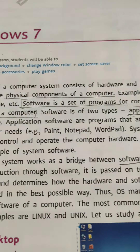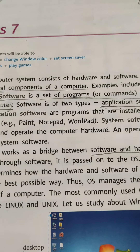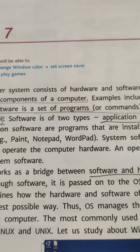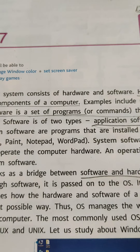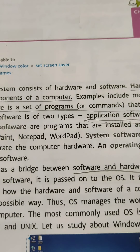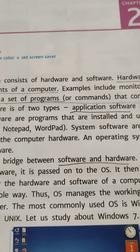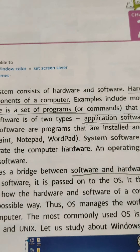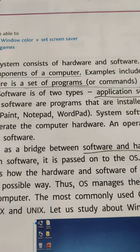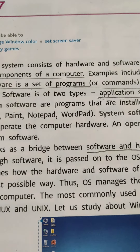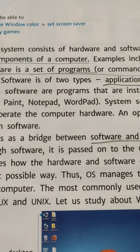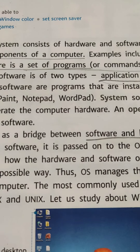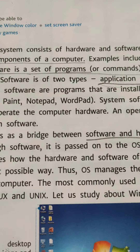These are application software. System software is the software whose programs control and operate the computer hardware. An operating system is one type of system software. All operating systems like Windows XP, Windows Vista, Mac OS, Macintosh operating system, Linux, and Unix are system software.